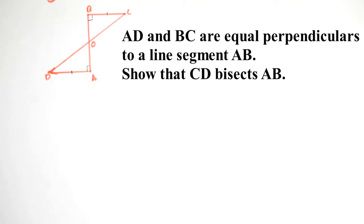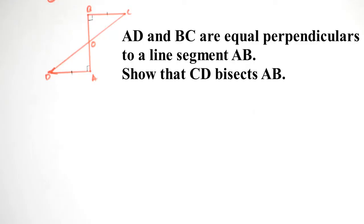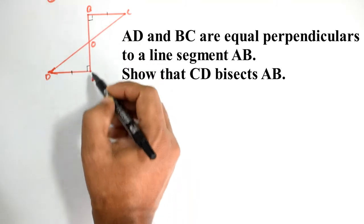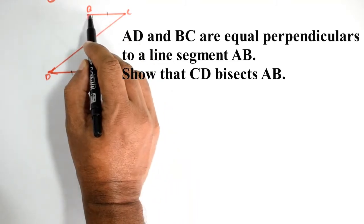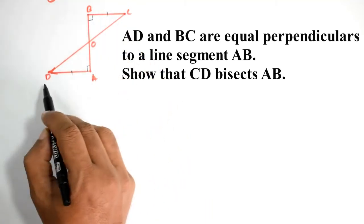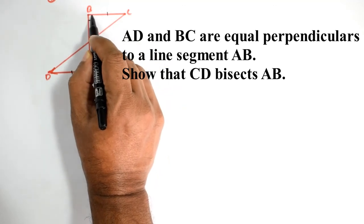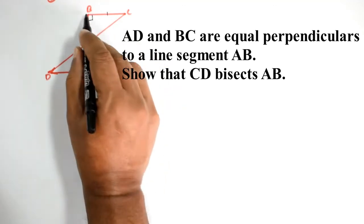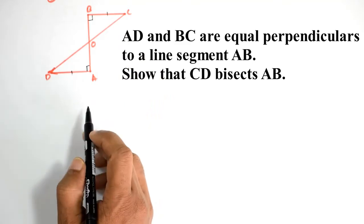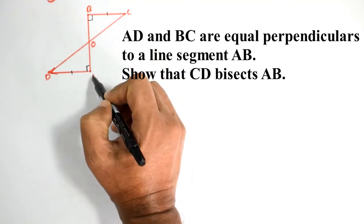AD and DC are equal perpendiculars to line segment AB. AB shows that CD bisects AB. AB is perpendicular to BC and AD. DC bisects AB.